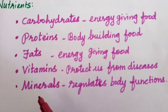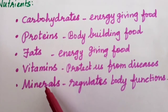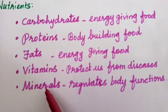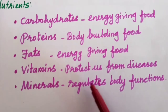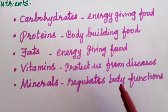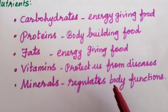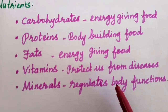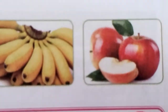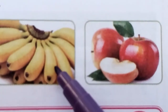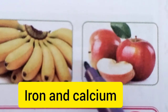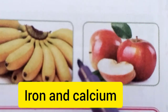Students, the last one is minerals. Minerals is also one of the nutrients that regulates our body functions such as formation of teeth, bones, blood, etc. Minerals are present in fruits and vegetables. Bananas and apples have iron and calcium minerals.